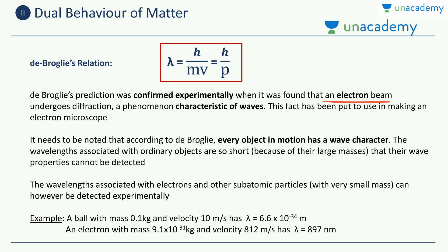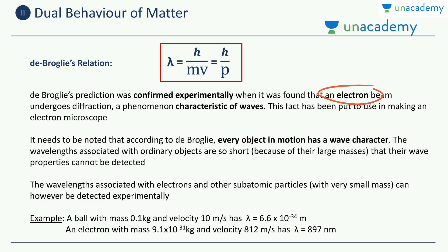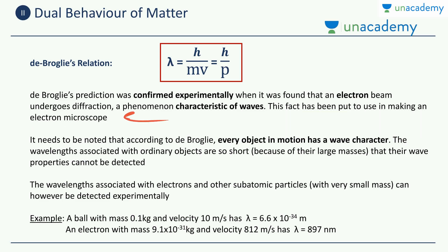Diffraction is a concept you will study later in videos. Diffraction is only undergone by waves — particles do not show diffraction. But scientists for the first time saw that particles also show diffraction. Hence, they concluded that particles, for example electrons in this case, because they show diffraction, they should have the properties of waves. Hence, electron being a particle also shows the properties of a wave. This fact has been put to use in making an electron microscope — this is the very same fact which has been used in the working of an electron microscope, the wave properties of an electron.